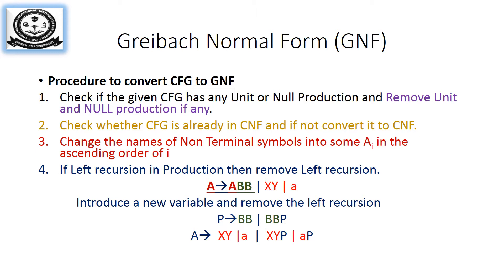Then you have to convert the terms into Greibach form. Sometimes when converting, you may encounter a recursive production. For example, A → ABB — here A is being replaced by A itself, and that type of recursion is called left recursion. You have to remove this left recursion. The left recursive part here is ABB, where ABB is the recursive part, and X, Y is the non-recursive part.